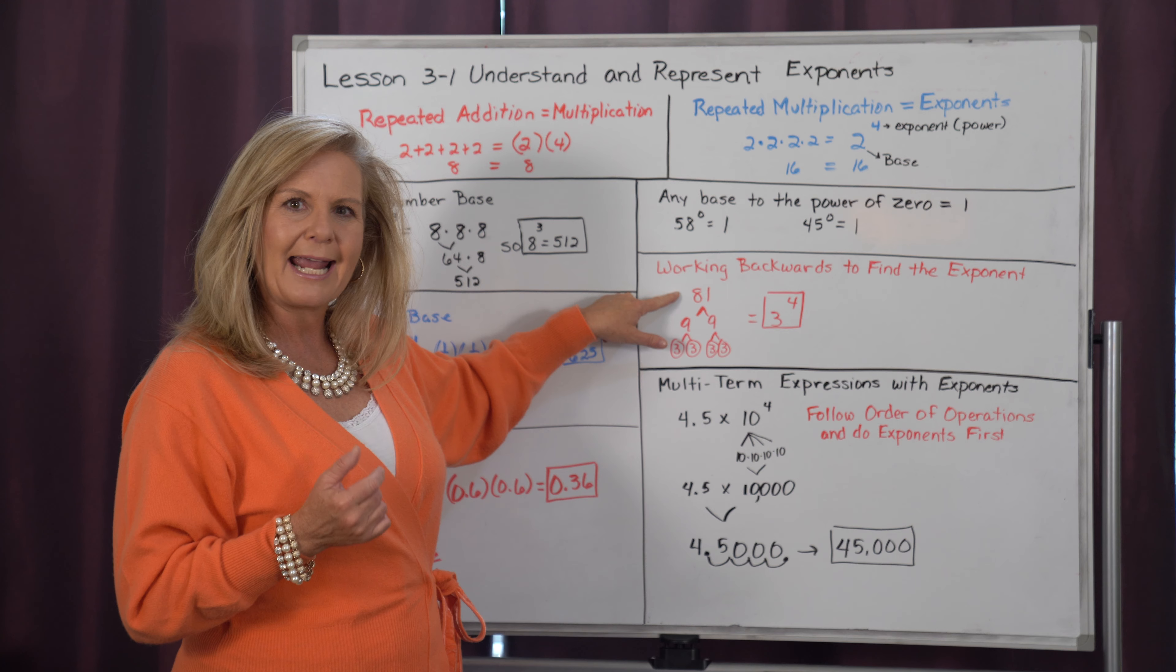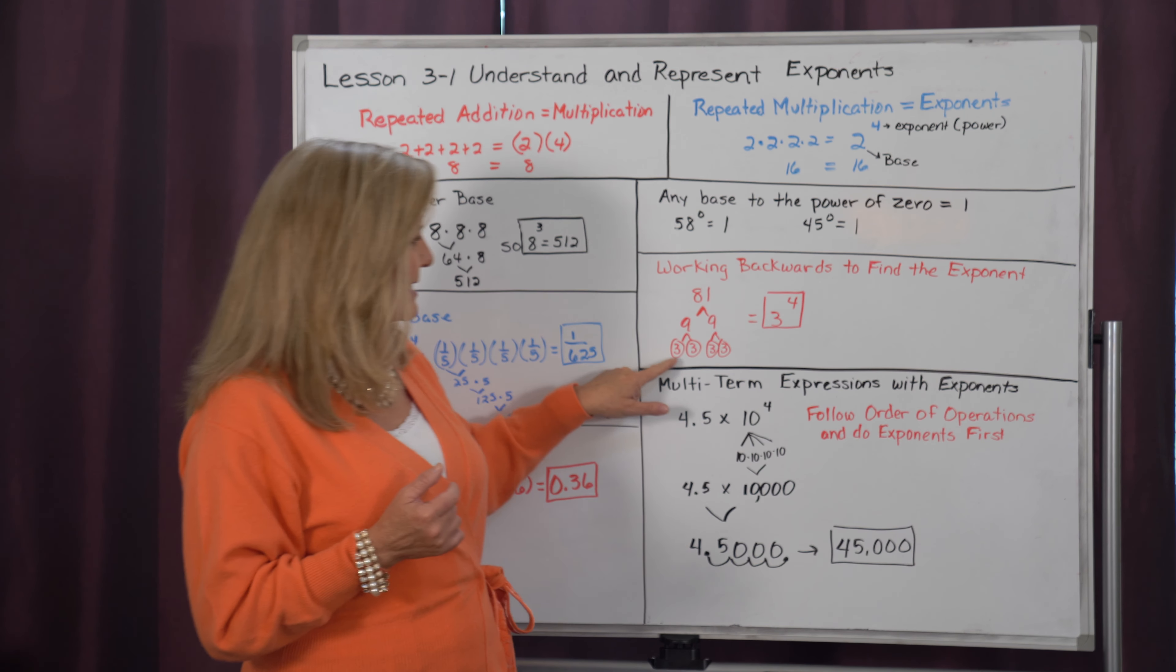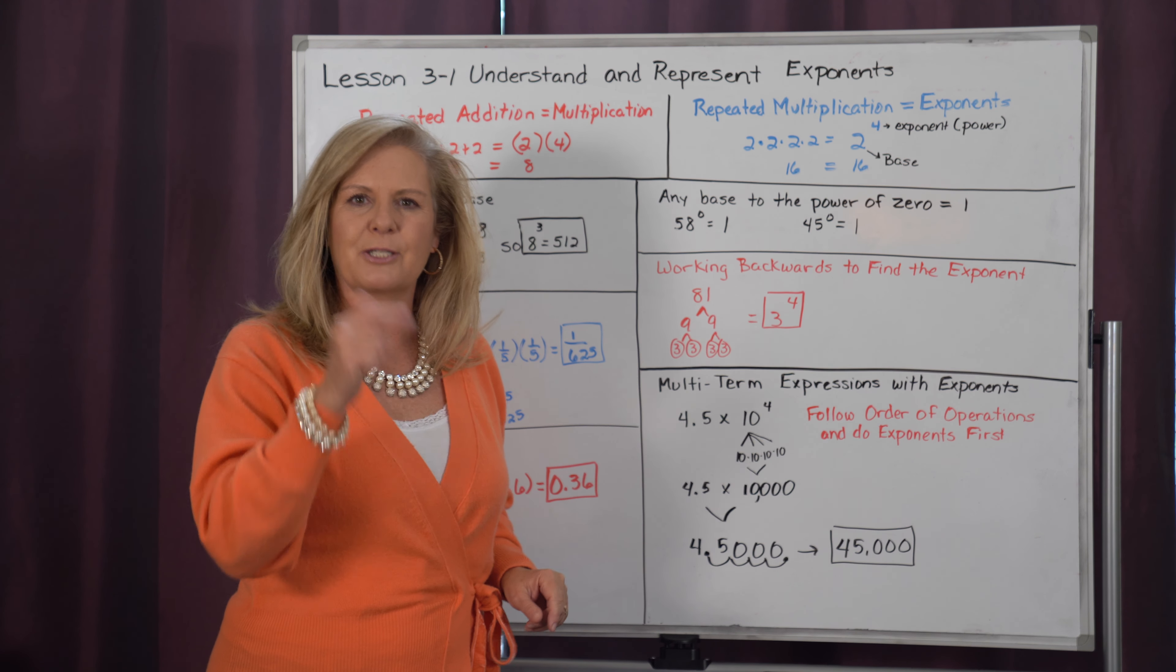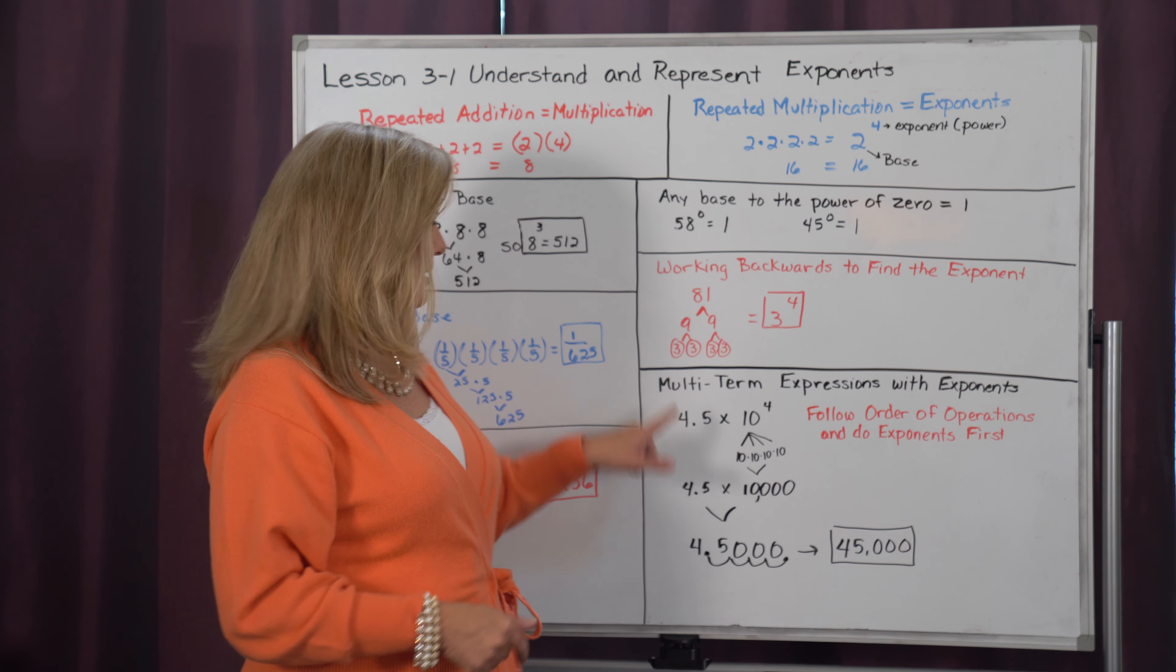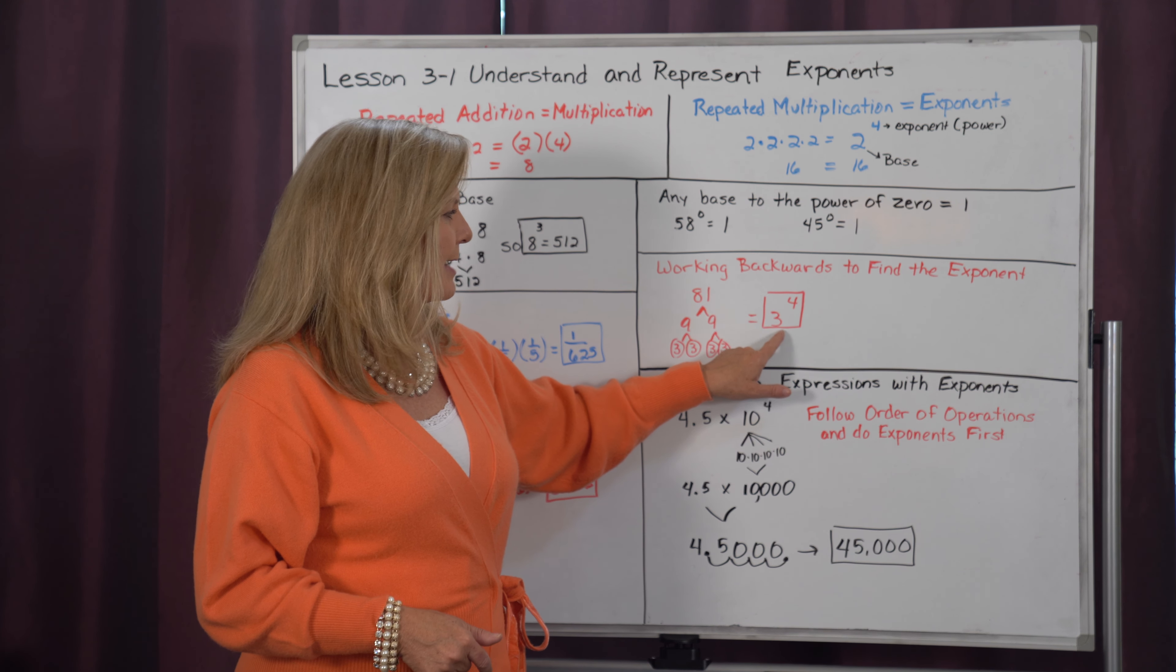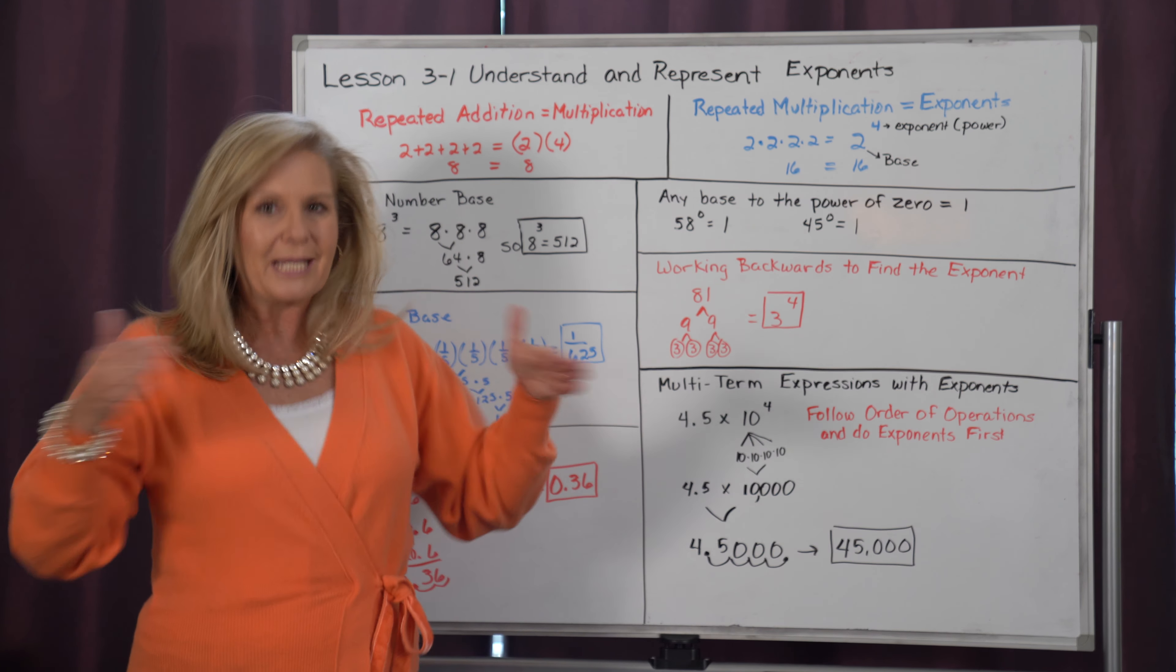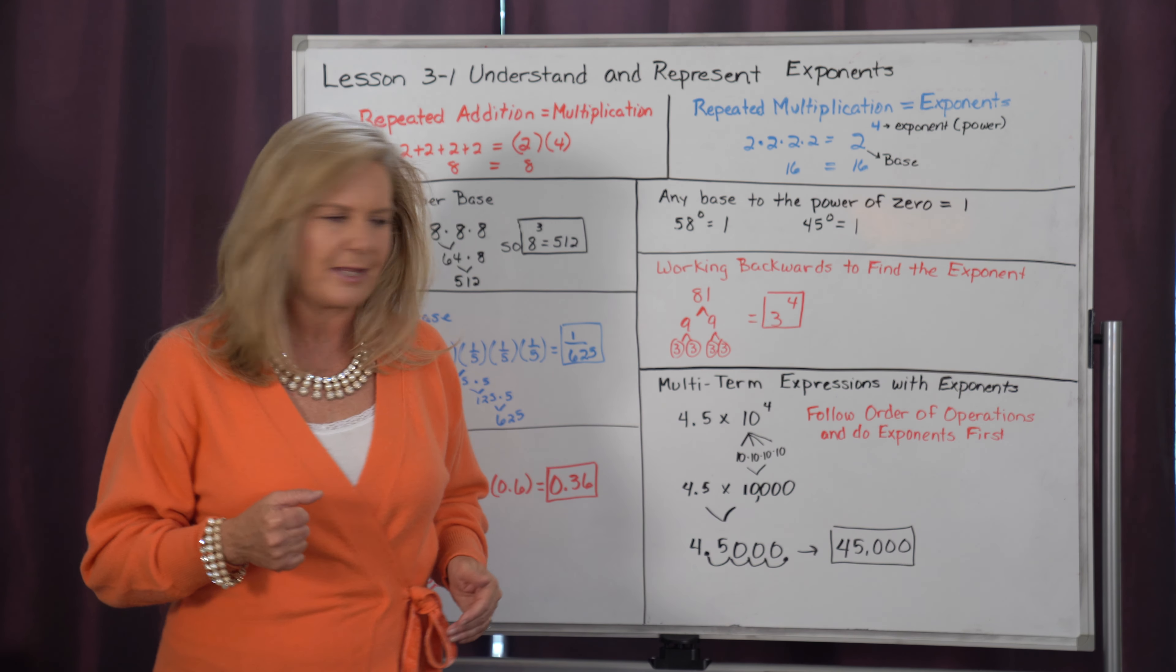So I can rewrite 81 back into its exponent form by just counting up how many times 3 is repeatedly multiplied. Well, it's multiplied once, twice, 3, 4. So I would write 81 is 3 to the 4th power. So we can go either direction when we're working with exponents.